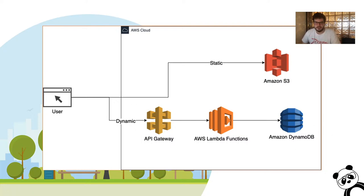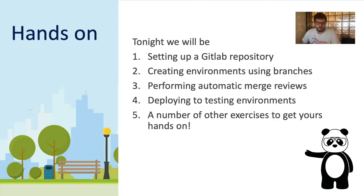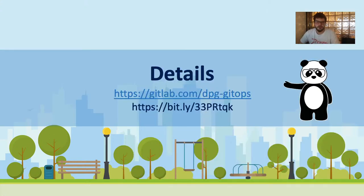We don't have to worry about the application itself — it's already built. What we'll be doing today is deploying it. To recap the agenda: we'll set up a GitLab repository, create environments using branches, perform automatic merge reviews, and deploy to a testing environment. You can open up gitlab.com/dpg-gitops and the second link which takes you to the GitHub repository, where you should see the documentation as well as our GitLab group.